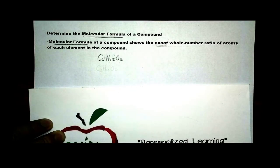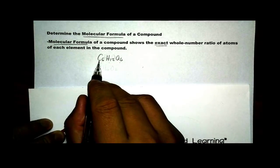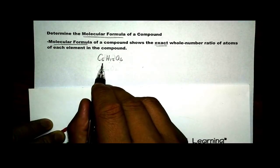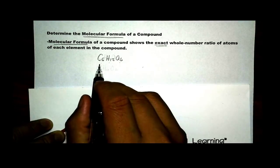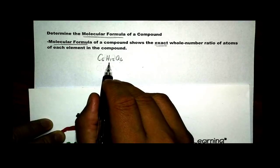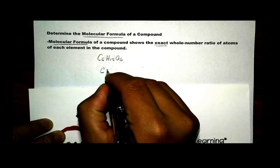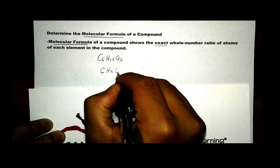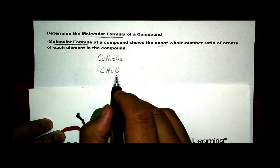In the last video, we talked about a formula called empirical. We can simplify the molecular formula of glucose. If we divide all the subscripts by 6, that gives us 1 carbon, 2 hydrogen, and 1 oxygen — CH₂O. We call this chemical formula the empirical formula.